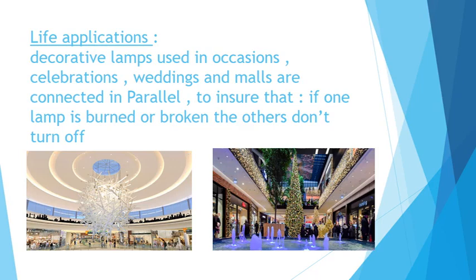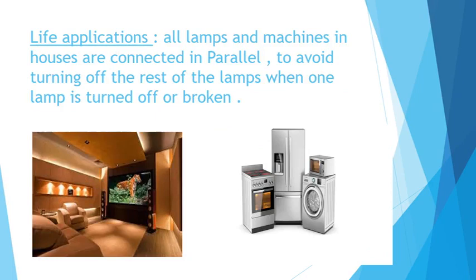If the lamps at occasions are connected in series and only one lamp is broken or unscrewed, the whole light will turn off. But if connected in parallel, no matter how many lamps are broken, the others will not turn off. Similarly, all lamps and machines in houses are connected in parallel — to avoid turning off the rest of the lamps when one lamp is turned off or broken. It's the same idea as the first life application.